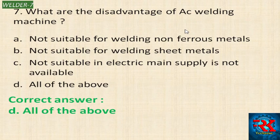AC welding machine disadvantages include: non-ferrous metals, sheet metals, and unavailability of electric main supply. A DC machine is used when AC welding machine is not suitable. Arc blow is a defect associated with DC welding machines, which is also a disadvantage.